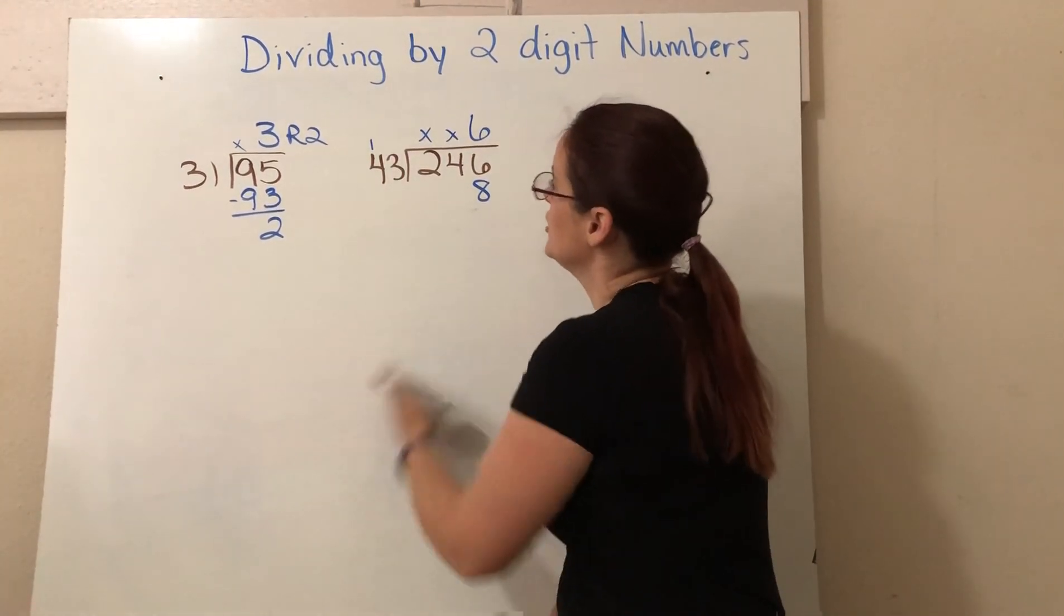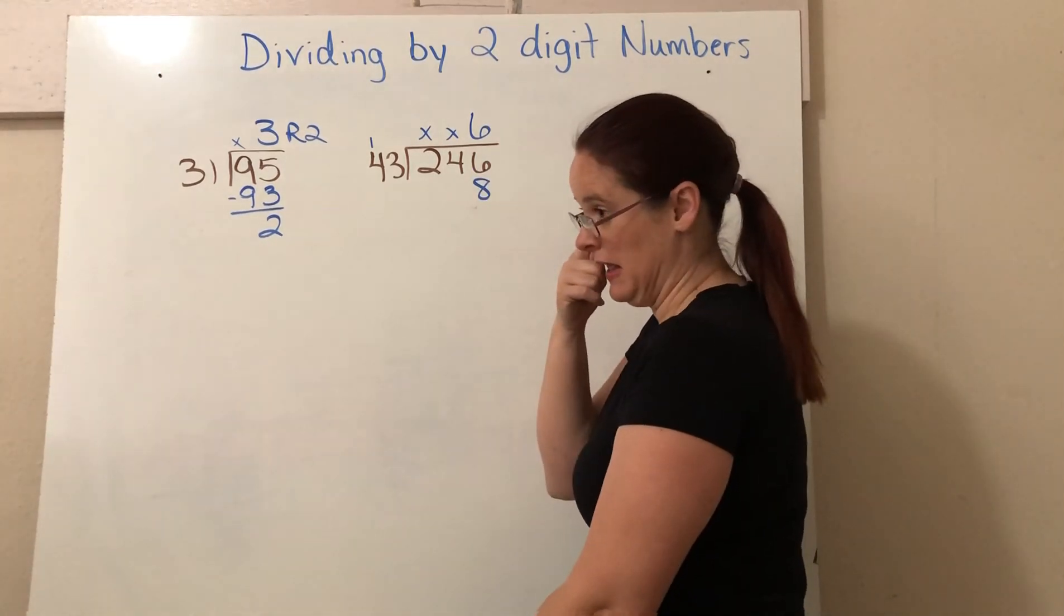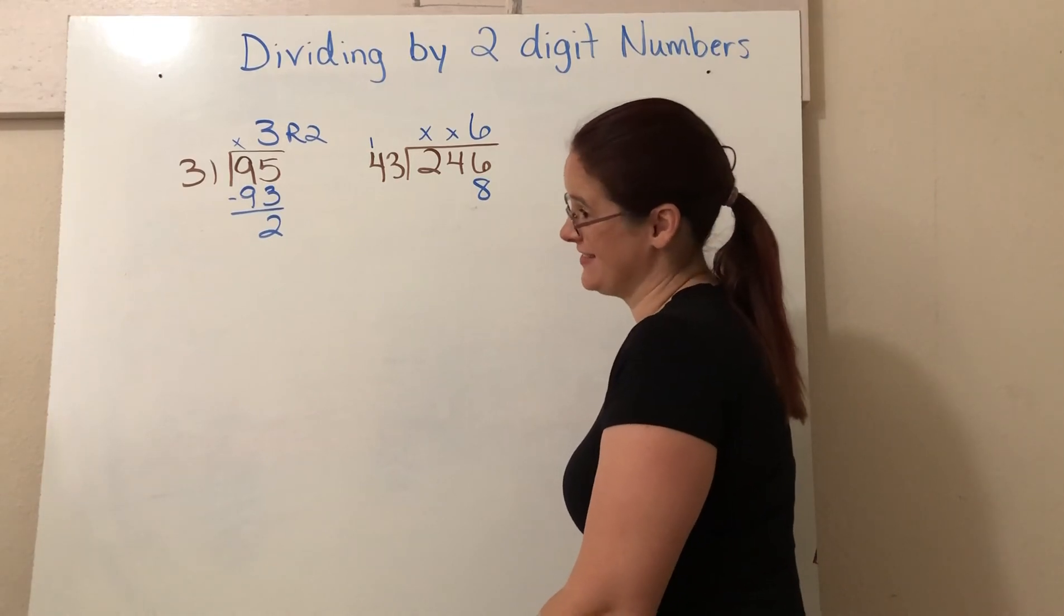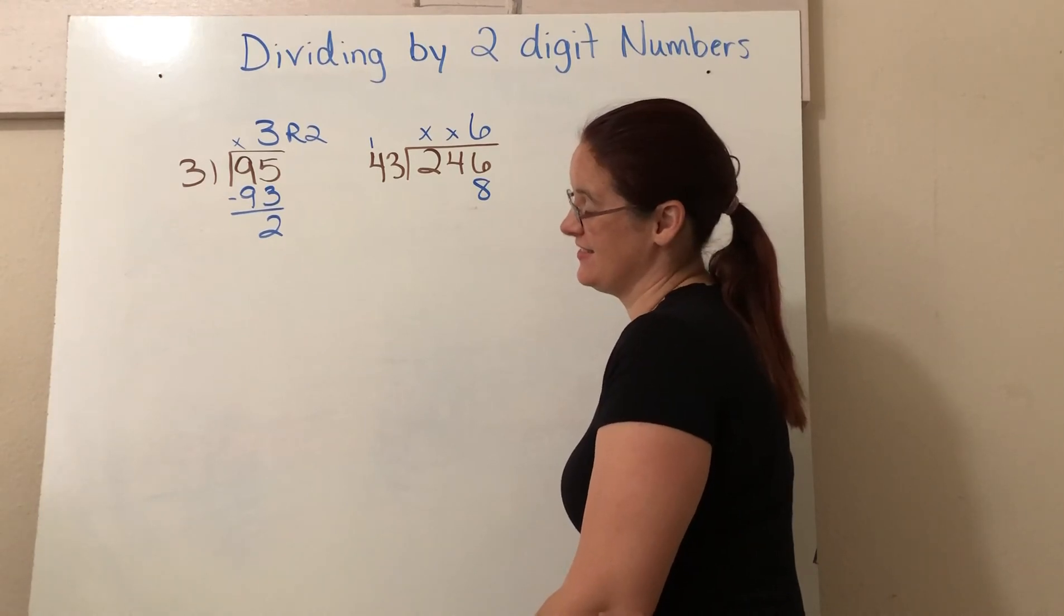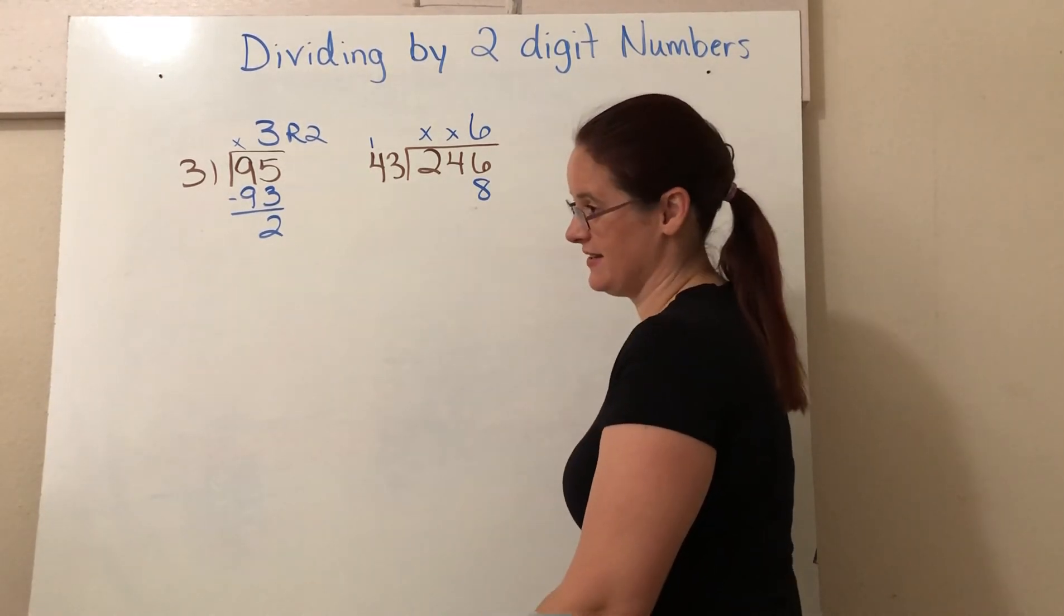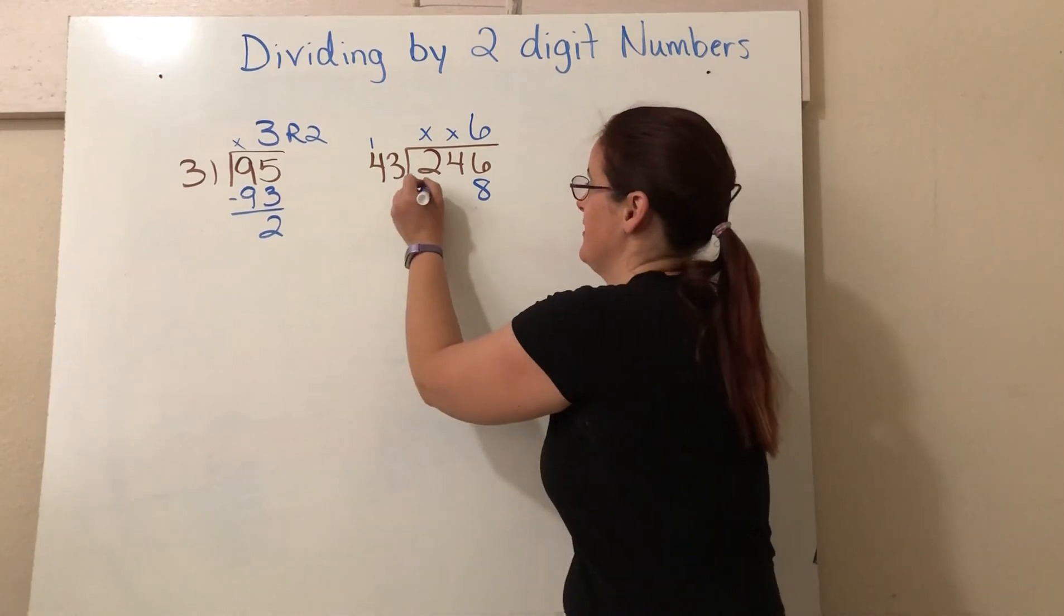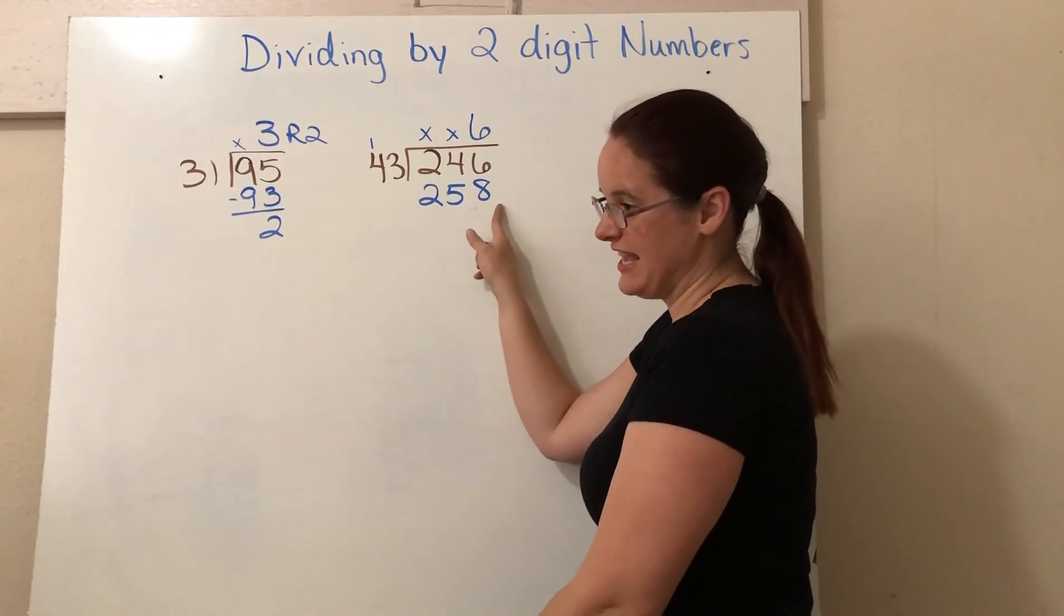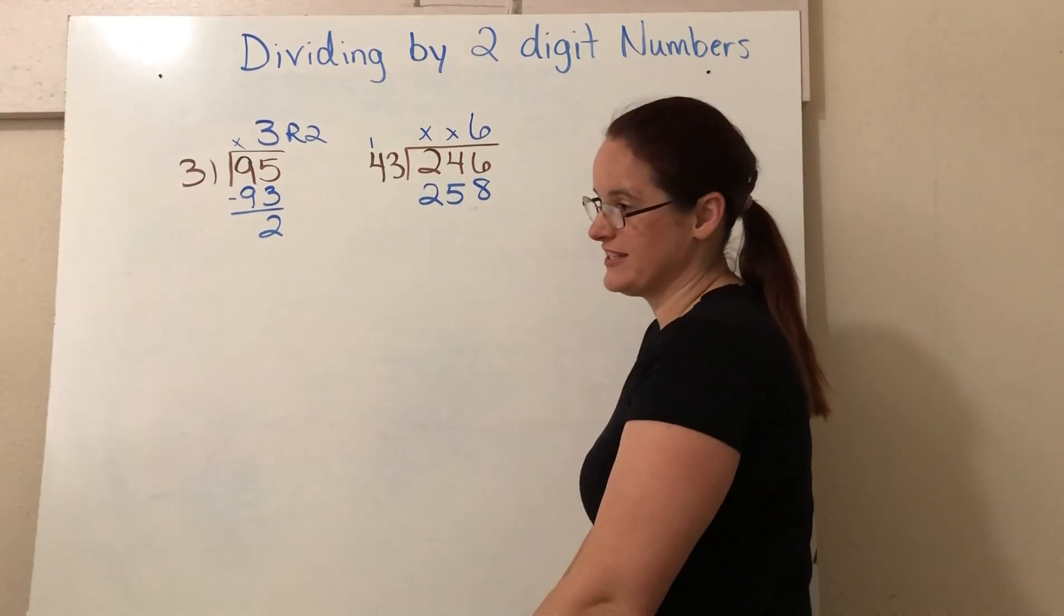Okay. So now what's six times four? 24. 24 plus one. 25. Now, can I take 258 away from 246?